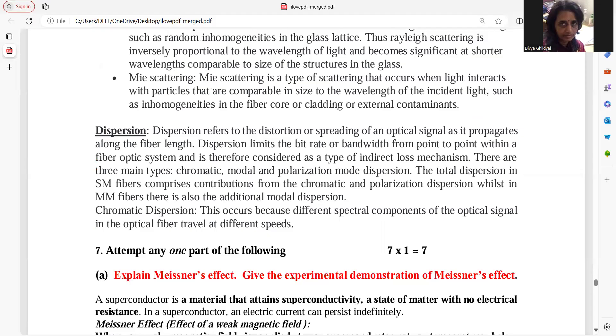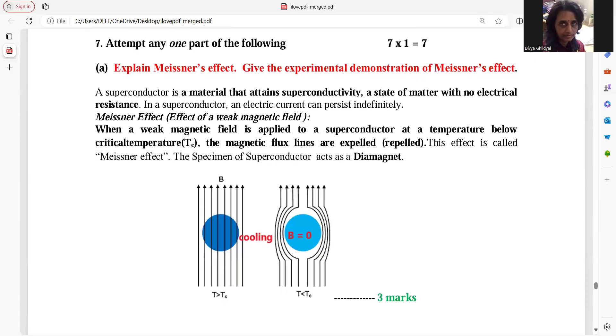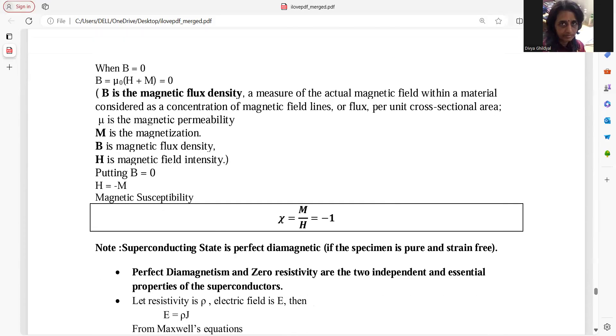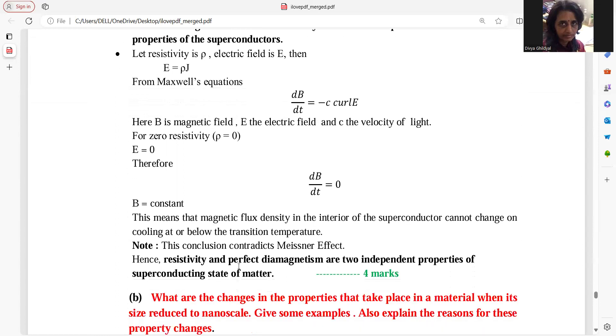Meissner effect. Experimental demonstration. Make this diagram. Explain what is Meissner effect. You will fetch your three marks at least here because they are all lengthy questions. And then you should be giving this explanation. They are asking you to give the experimental explanation. You should be telling about resistivity and perfect diamagnetism.